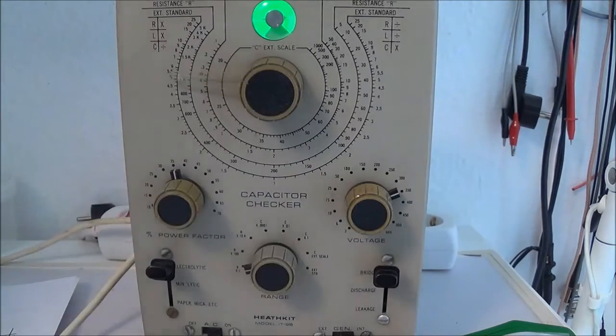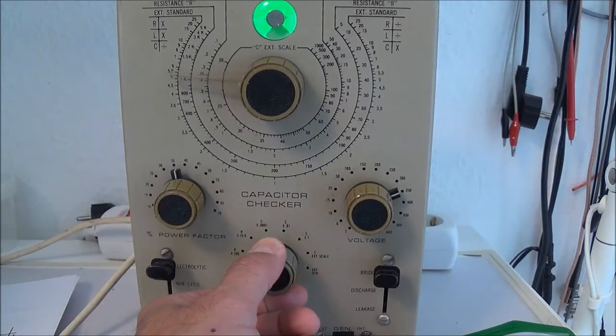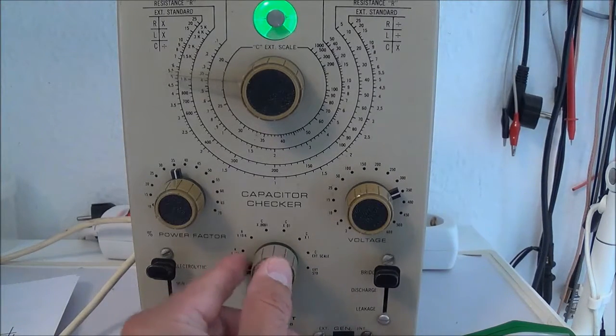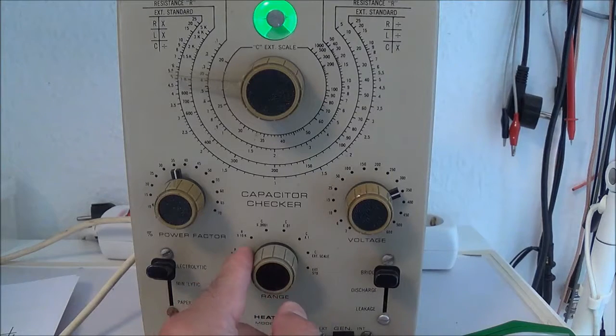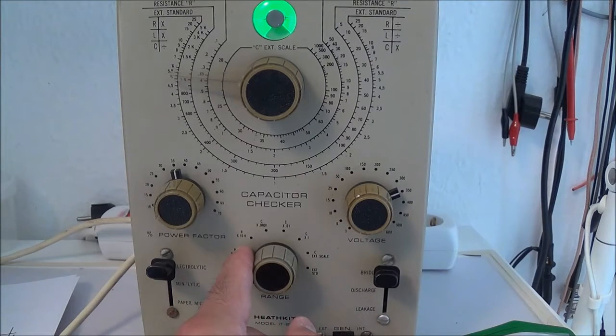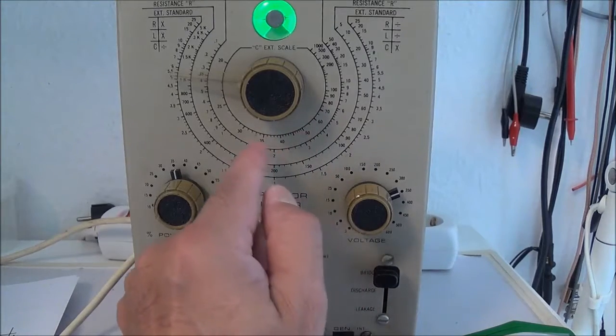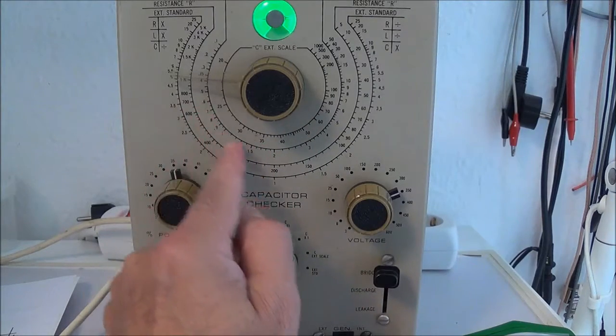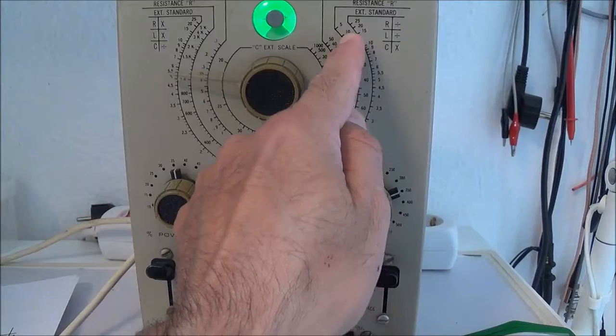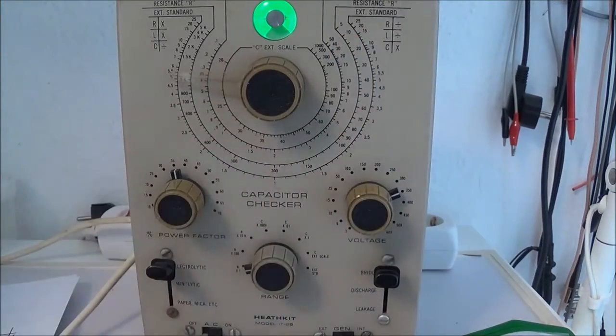Wait a second, so it actually would have to be right here I believe. I'm not actually sure, but I'm on the right scale, R times one. There's R times 100, so if I was on the R times 100 scale then I'd have to be over here on 10. So I think I'm actually on the right scale.